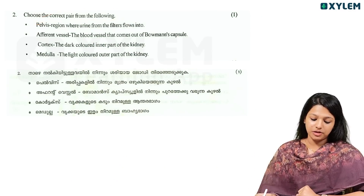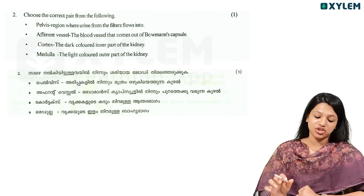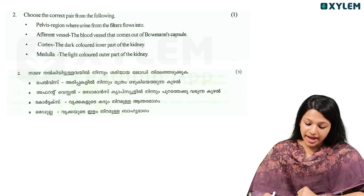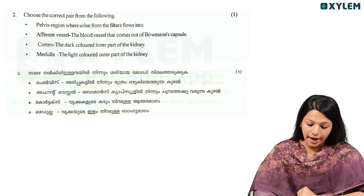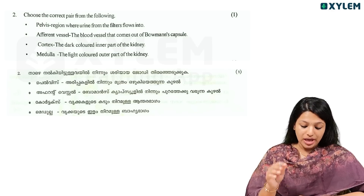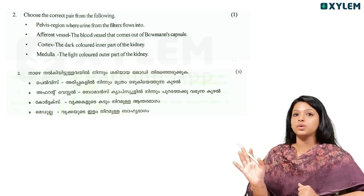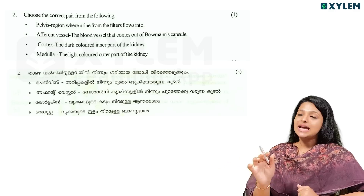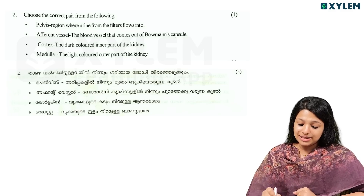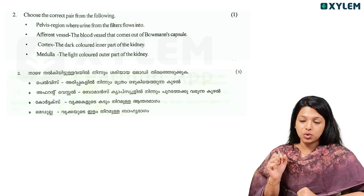Choose the correct answer from the following. The pelvis region is where urine from the filters flows into. The efferent vessels are the blood vessels that come out of the Bowman's capsule.